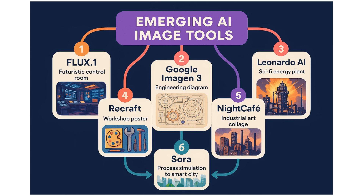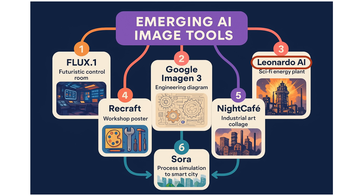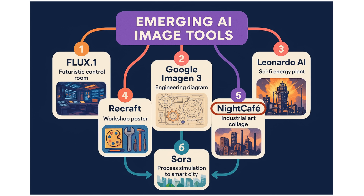We've covered the current top five, but the AI race is far from over. Here are the emerging tools to watch. Number one: Flux.1, delivering stunning high-precision imagery from the team behind Stable Diffusion. Number two: Google Imagen 3 — crystal-clear outputs, seamlessly tied into the Gemini ecosystem. Number three: Leonardo AI — cinematic detail that can bring industrial designs and futuristic engineering concepts to life. Number four: ReCraft — laser-focused on brand consistency, perfect for clean, professional visuals. Number five: Nightcafe — a multi-model creative hub that's as friendly for beginners as it is for pros.